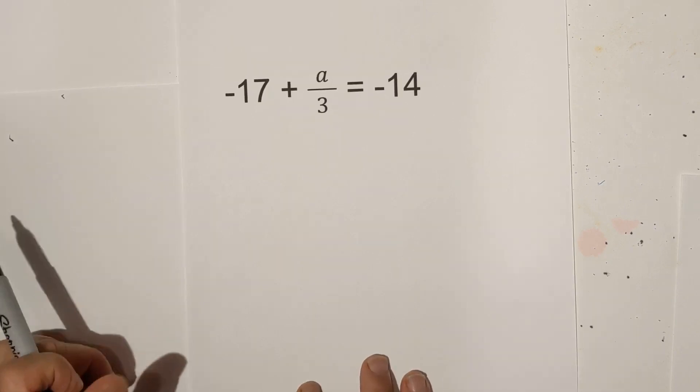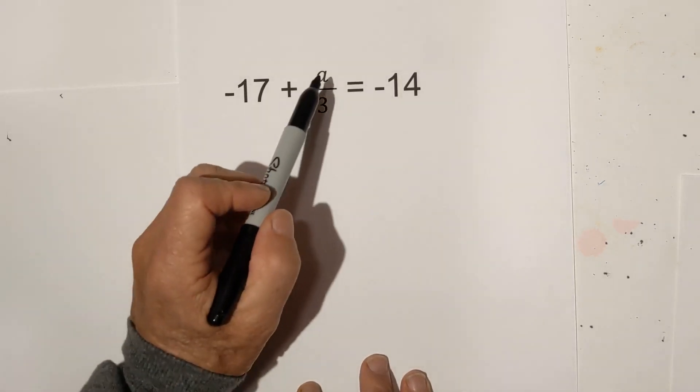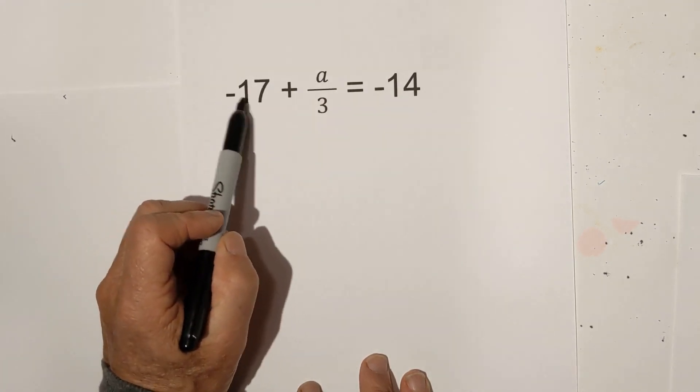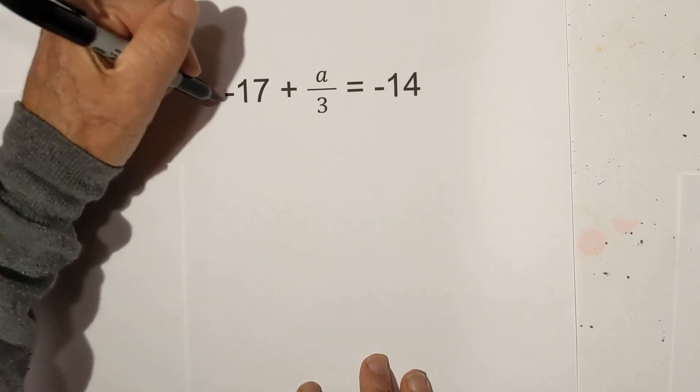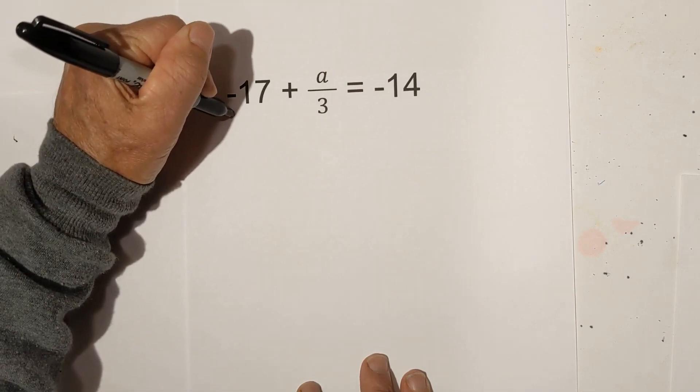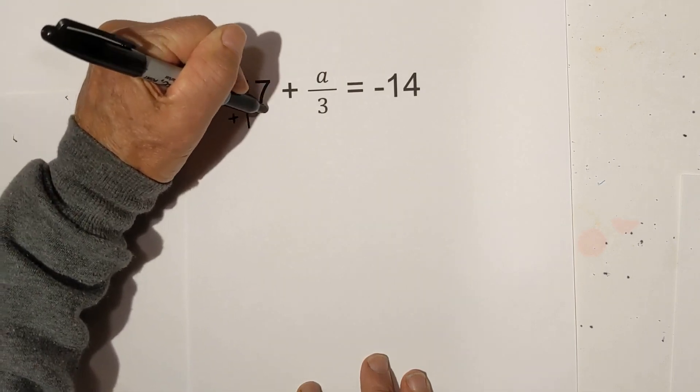Here's our last example. First thing I'm going to do, again, we have the a in a fraction. I'm going to get rid of the 17. Since it's negative, I'm going to add 17 to each side.